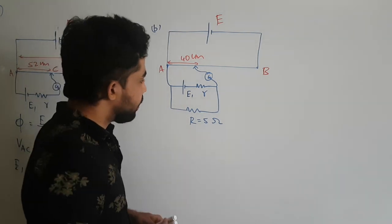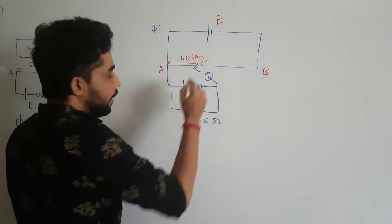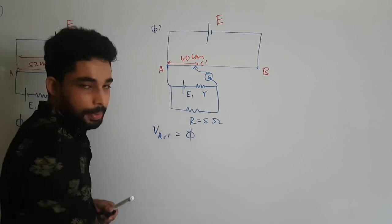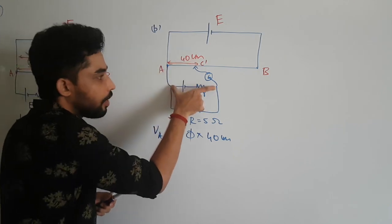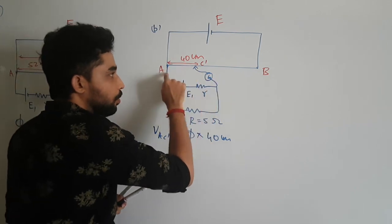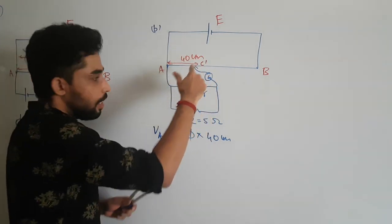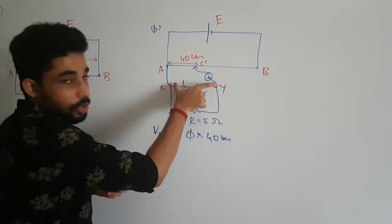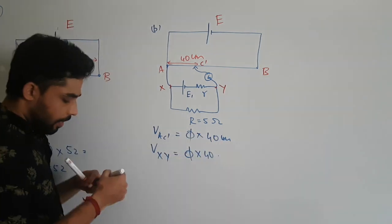Now consider the second case. The length is 40 centimeters. If I call this point C-dash, the potential across AC-dash is going to be k × 40 centimeters. Since there is no current flow through the galvanometer path, the potential between points x and y on the cell side has to be the same — so V_xy equals k × 40. But is V_xy equal to e1 in this case?